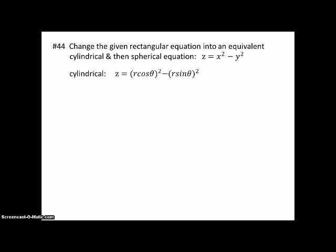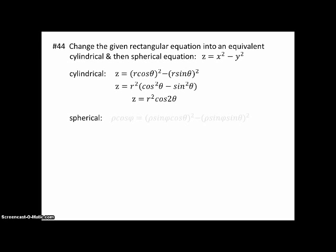Number 44. Change the given rectangular equation into an equivalent cylindrical and then spherical equation. z equals x squared minus y squared. Well, for cylindrical, we just replace x and y with what they're equivalent to, namely r cosine theta and r sine theta. And then we can simplify that a little bit by factoring out r squared and using an identity to make it look nicer. And then the book just stops here. I know in the past sometimes we would solve for r or r squared, but evidently that's not necessary in this section. For spherical, we have to replace z, x, and y with their spherical equivalent expressions. And again, we can pretty it up. We can square those quantities and factor out a rho squared sine squared phi. And then replace cosine squared theta minus sine squared theta with an identity. And also, if you want, you can divide out a rho. And so we can make it look a little bit better.